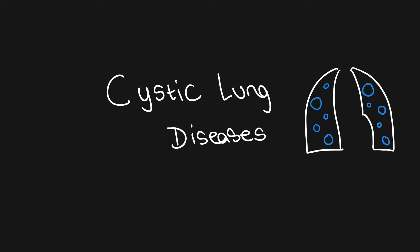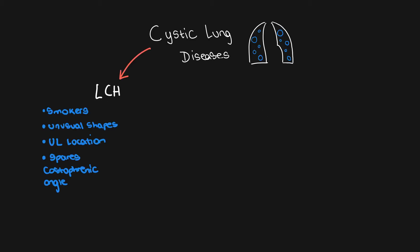In this video, we're going to be discussing the radiological differential diagnoses for diffuse cystic lung diseases. The first diagnosis to consider is Langerhans cell histiocytosis, or LCH. This usually occurs in smokers. It starts off with nodules, which then cavitate to form unusually shaped cysts. These cysts are usually in an upper lobe location, with sparing of the costophrenic angles.